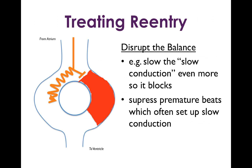How do you treat re-entry? There are a couple of different strategies, but the main idea is to disrupt that finely tuned balance between the fast and the slow pathway in order to take away the re-entrant physiology. For example, you could slow the slow conduction even more so that there is no conduction at all and there's block into the slow pathway. Or an alternative strategy is to suppress the premature beats which are occurring, which often can set up that slow-fast conduction and that finely tuned balance in the first place.